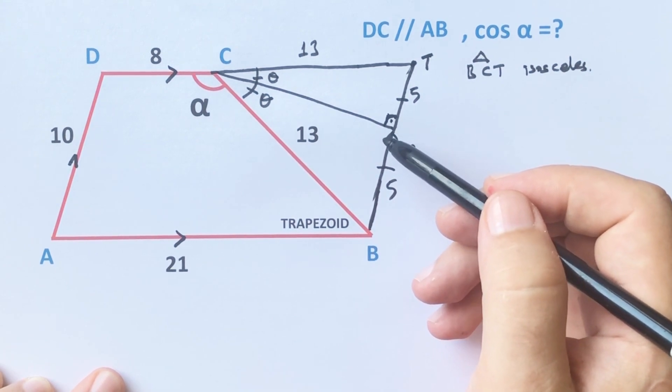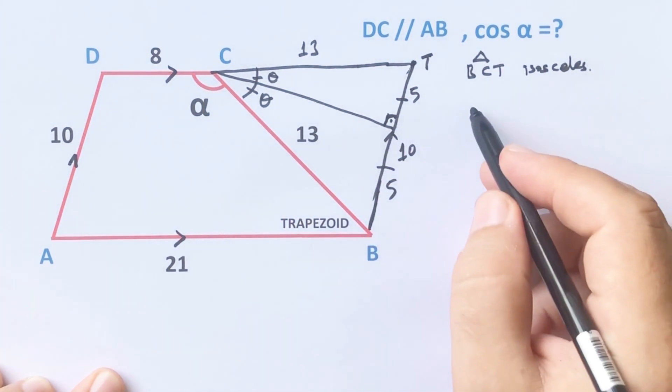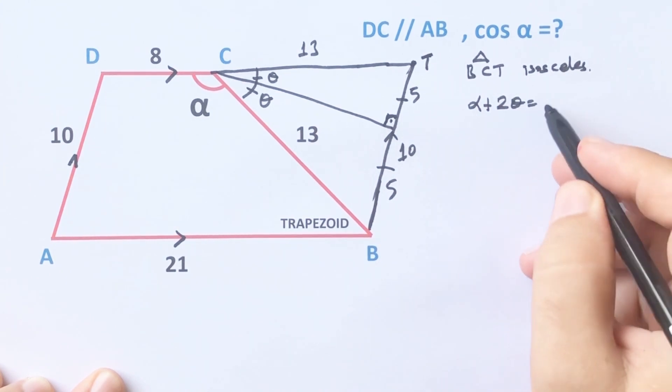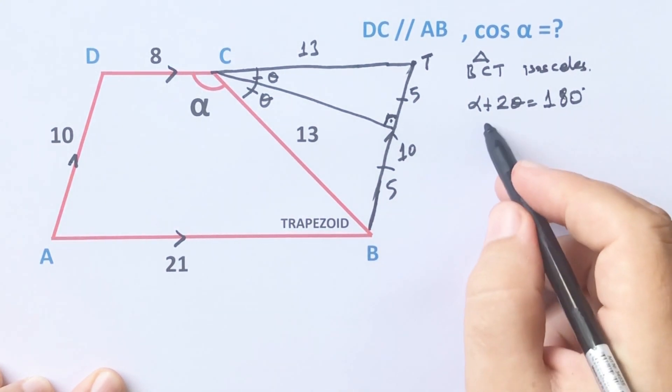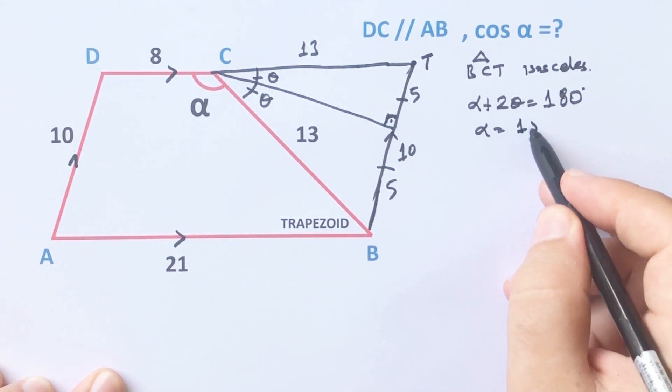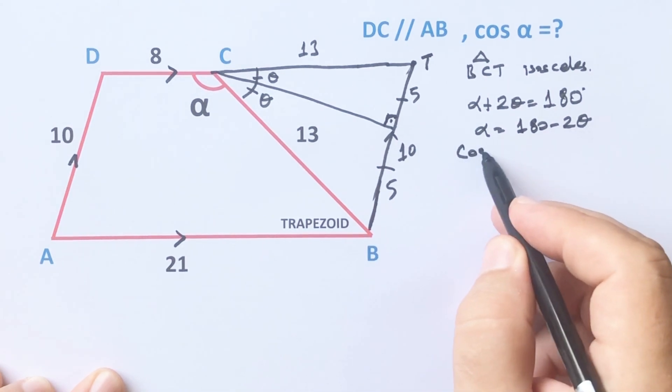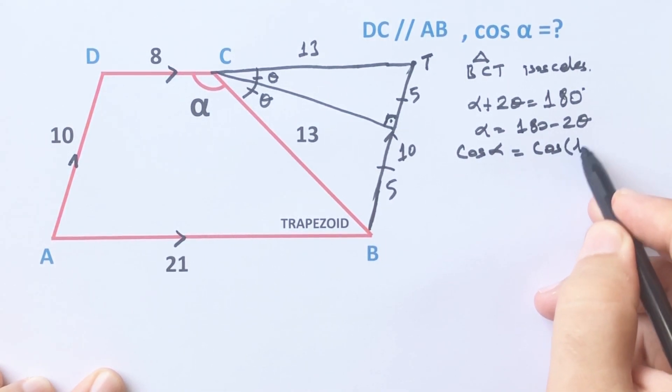And then alpha plus 2 theta equals 180 degrees. Therefore, alpha equals 180 degrees minus 2 theta. And then if you take the cosine of both sides of the equation.